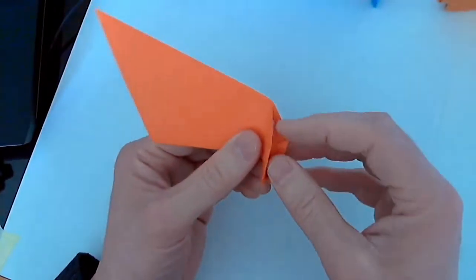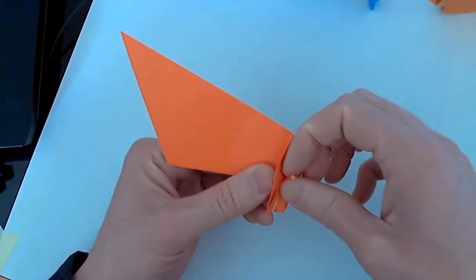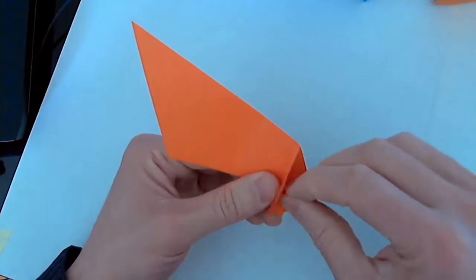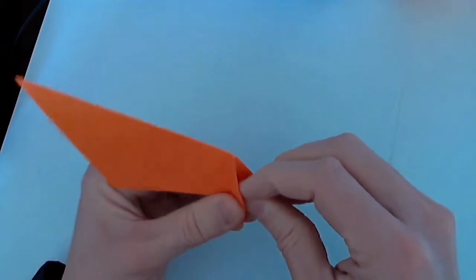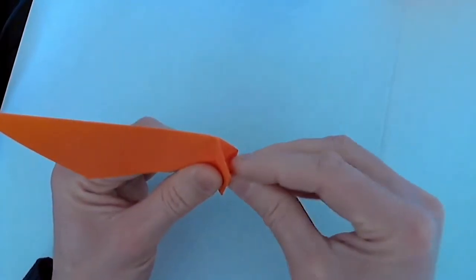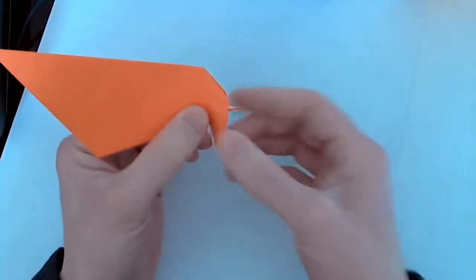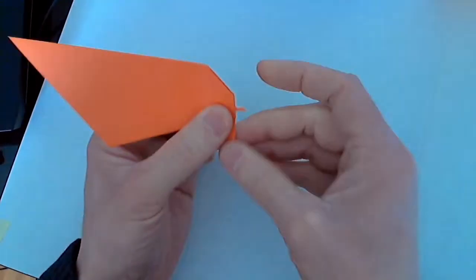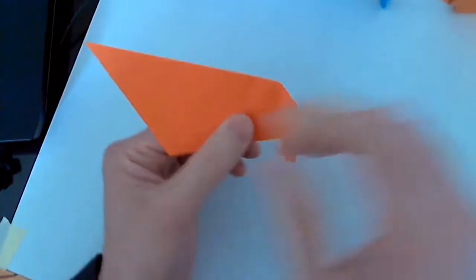Now we need to make the tail. Open it up again and pull this out a little bit. We're going to try to reverse the fold. The paper's been reverse folded a couple times already, so it might not want to make a nice fold. If that happens, you can just squish it down like I'm doing here so that it sticks out and has a little stubby tail.